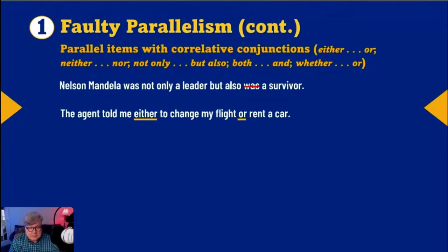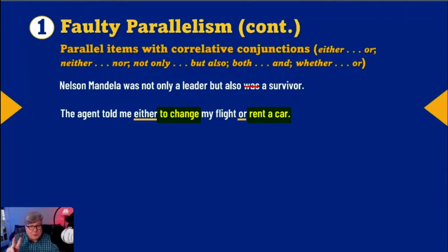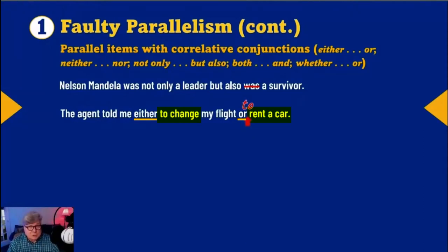The agent told me either to change my flight or rent a car. The first correlative is followed by 'to change,' so the second correlative needs to be followed by 'to rent.' What is to the right of each correlative must be the same: either to change my flight, or to rent a car.